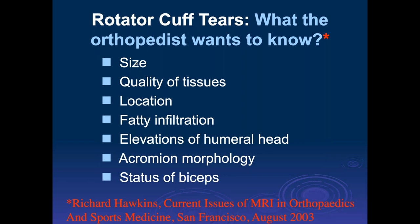Seven things some orthopedic surgeons think should be in every MR report when concerned about rotator cuff tears — from Dick Hawkins at the Steadman Hawkins Clinic in Vail, Colorado. He wants: the size of the tear, the quality of the surrounding tissues, the location of the tear, the amount of fatty infiltration in the muscles, whether there's superior migration of the humeral head, the acromial morphology, and the status of the biceps tendon. The biceps is commonly a source of pain with rotator cuff tears — it doesn't make sense to fix the supraspinatus if most pain is coming from the biceps.